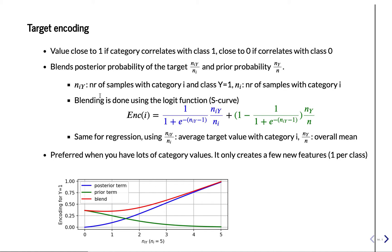So to avoid that, we use this blending. We blend the posterior probability with the prior probability.